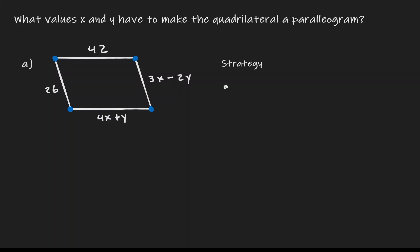We know that for any quadrilateral to be a parallelogram, opposite sides need to be congruent. So if opposite sides need to be congruent, let's set opposite sides equal to each other.